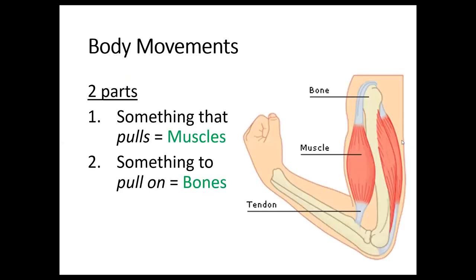When you think about movement, remember that two organ systems are involved. You have something that pulls — the muscle — and something that it pulls on — the bones. You can't have movement unless you have both. That is why these are called skeletal muscles: they pull on and move the skeleton.